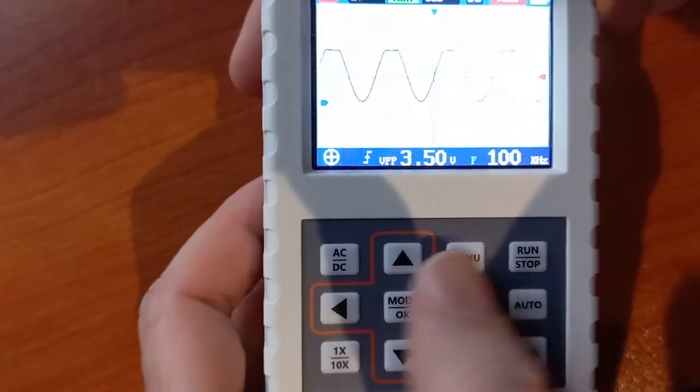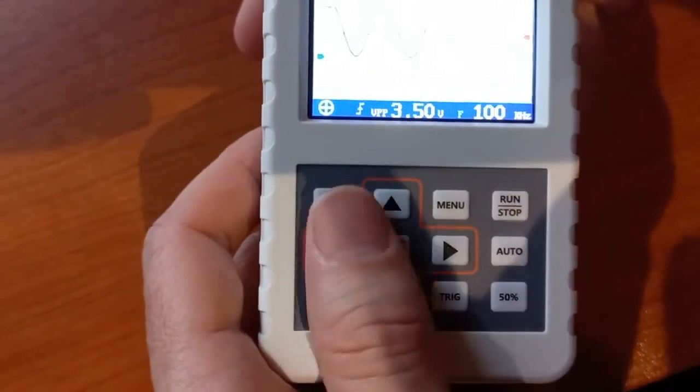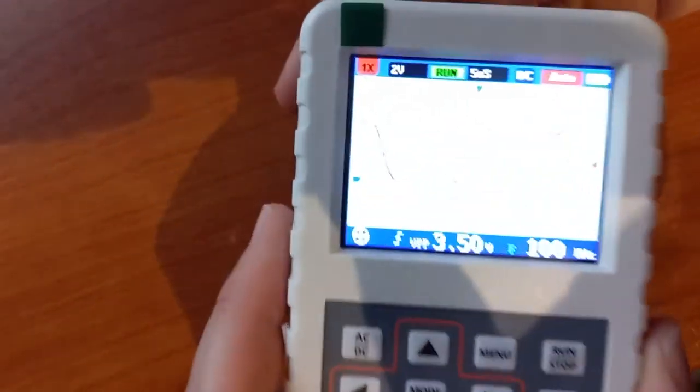All the other settings, all the usual settings are there. Adjust voltage per division, time per division, etc.